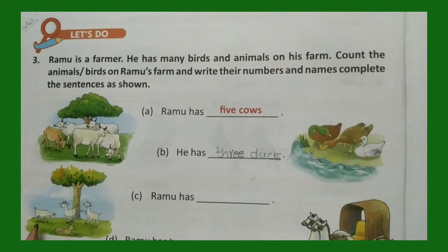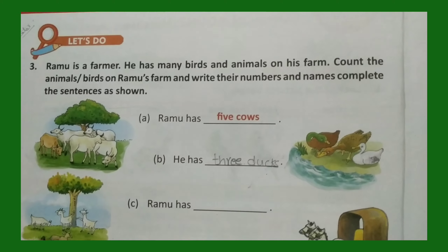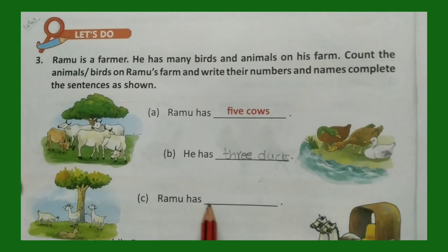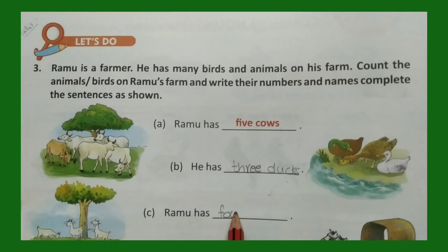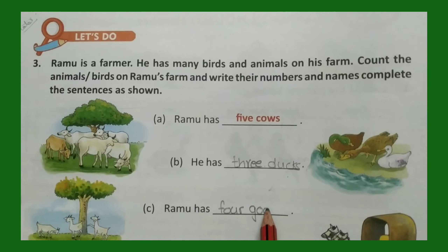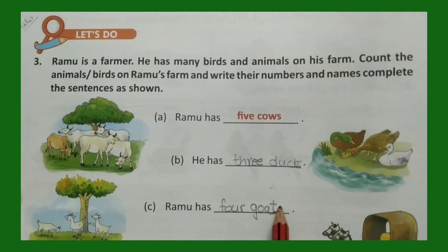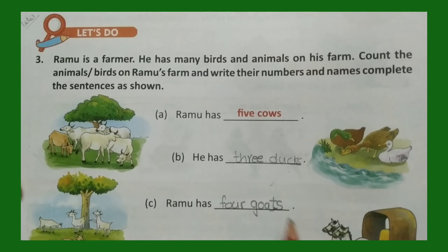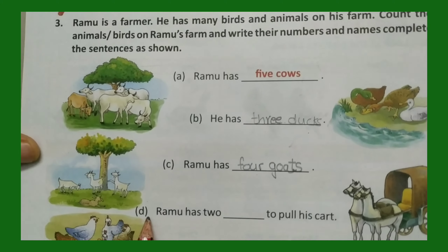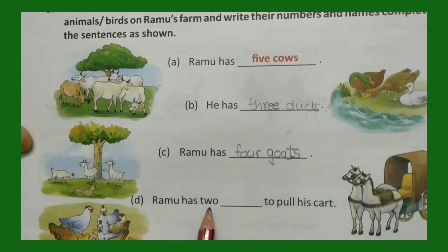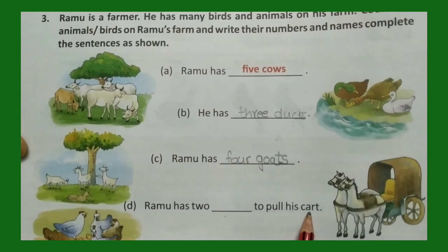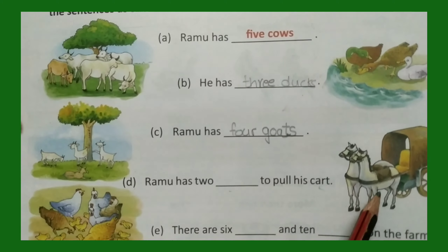For c, Ramu has dash. Look at the picture — what are these? Let us count: one, two, three, four. Four — is it goat or goats? More than one, so we write goats. Four goats. Now, d: Ramu has two dash to pull his cart.